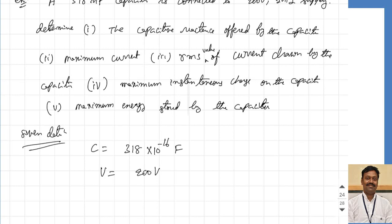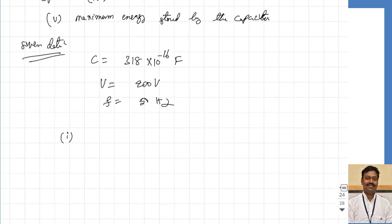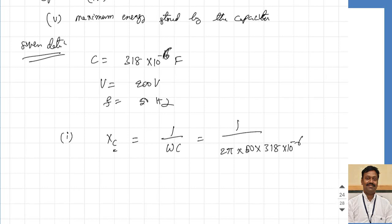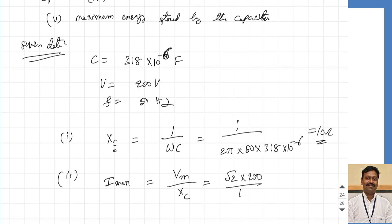Part one: capacitive reactance Xc equals 1/ωC, where ω equals 2π into F. Substituting: 1 divided by 2π into 50 into 318 into 10 to the power of minus 6, which gives a value of 10 ohms. Part two: the maximum value of current equals the maximum voltage divided by the capacitive reactance, because the ratio of voltage to current equals Xc. So I maximum equals root 2 times 200 divided by 10, which gives 28.28 amperes.